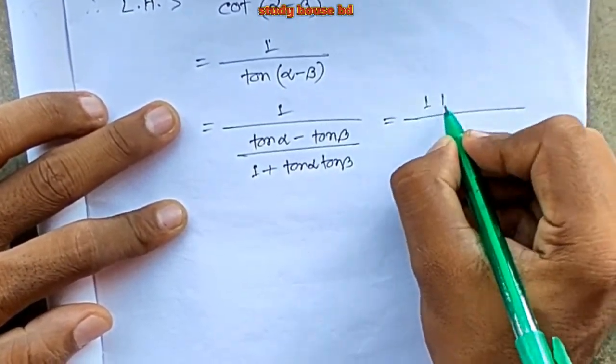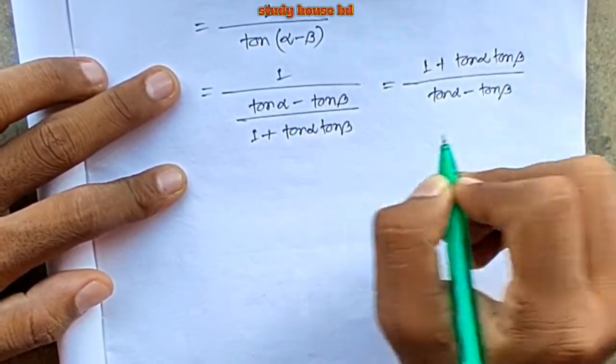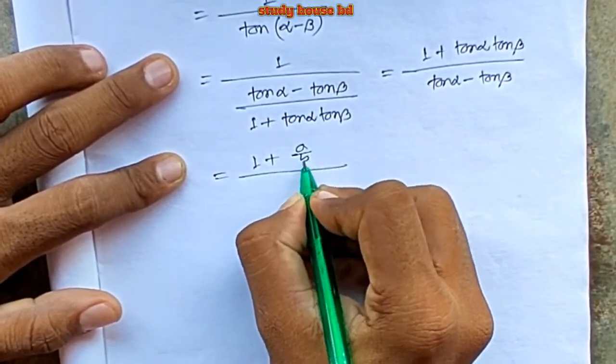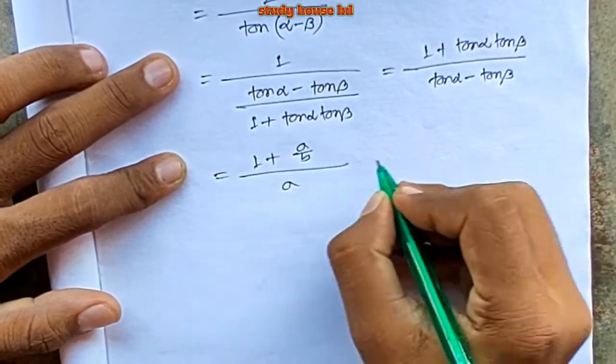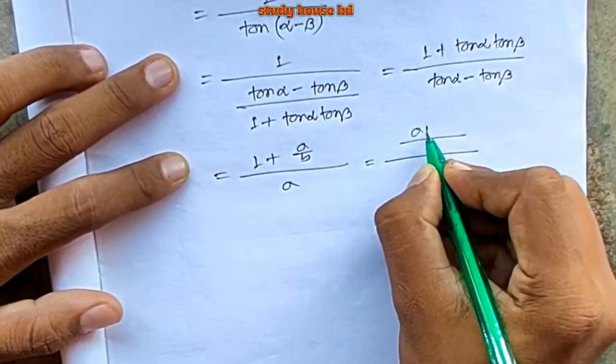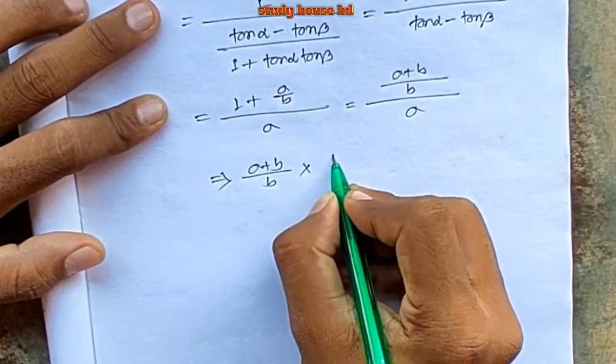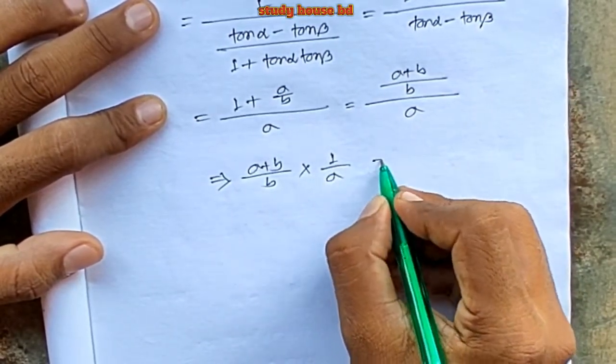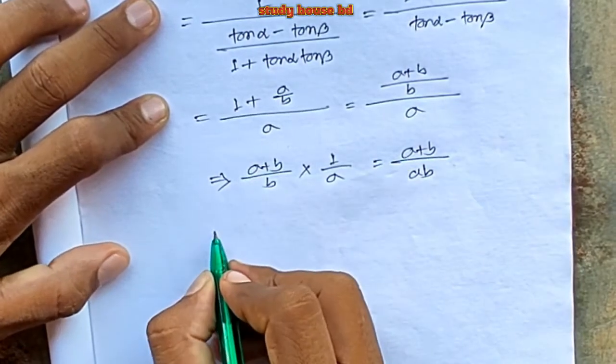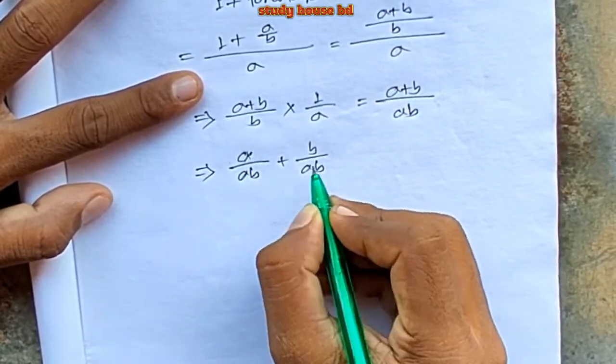So 1 plus tan alpha tan beta over tan alpha minus tan beta. This is a by b over tan alpha minus tan beta. So it can make the variable ab, one by a.